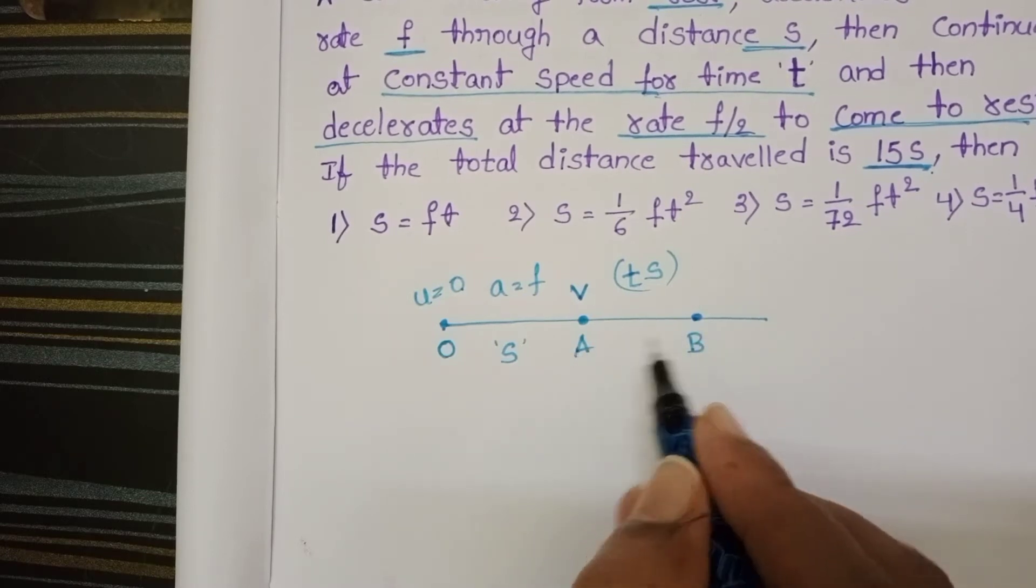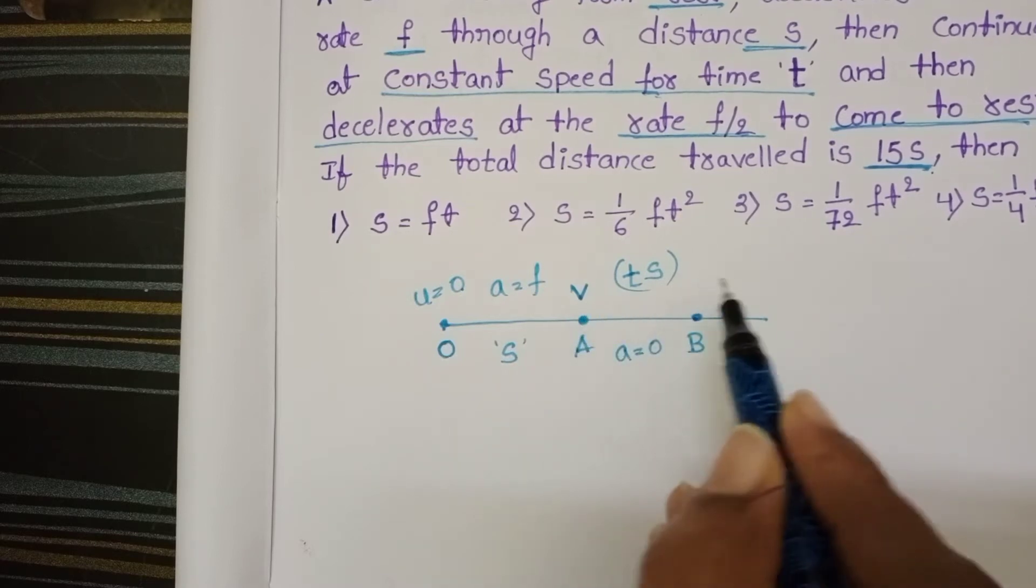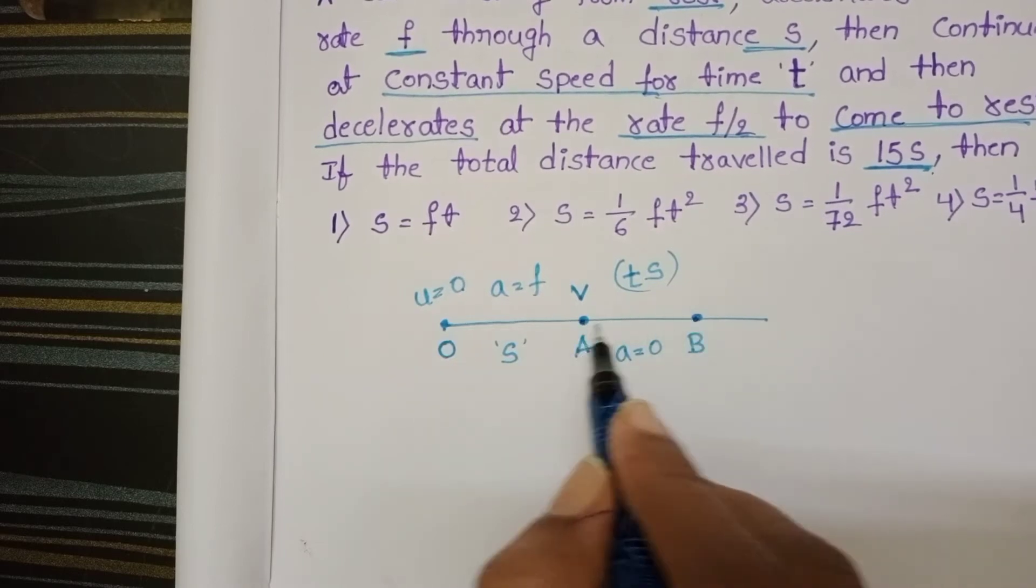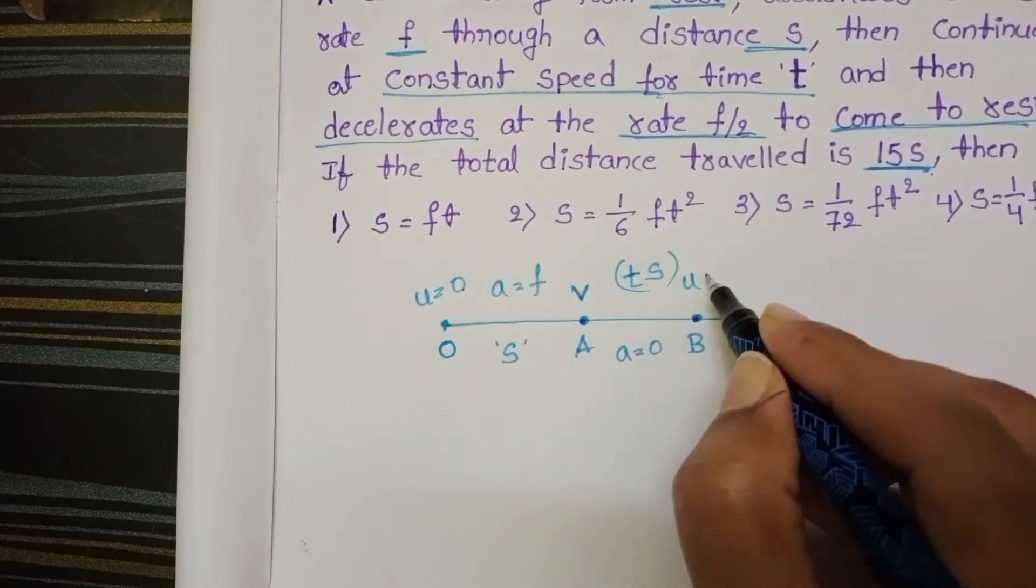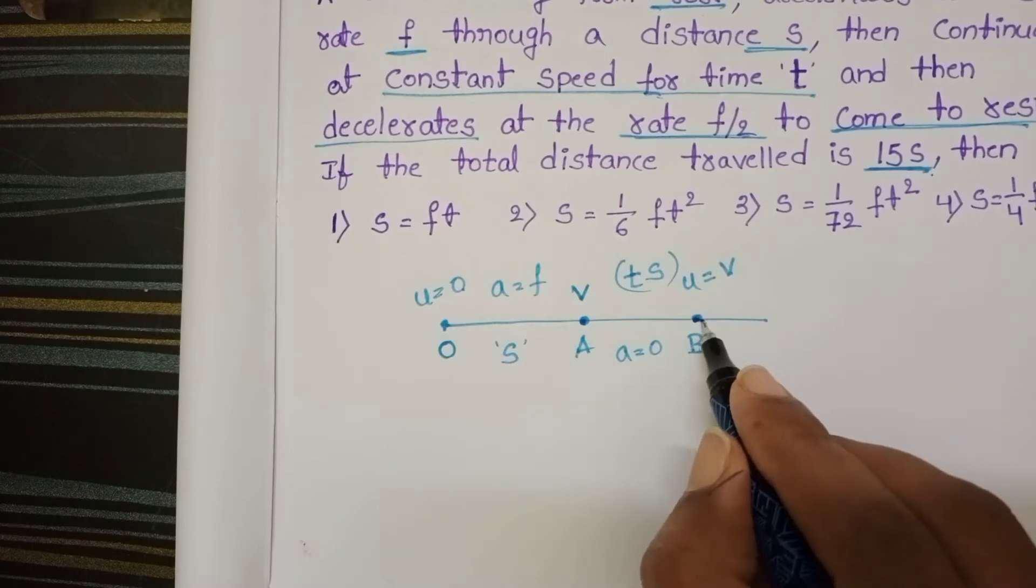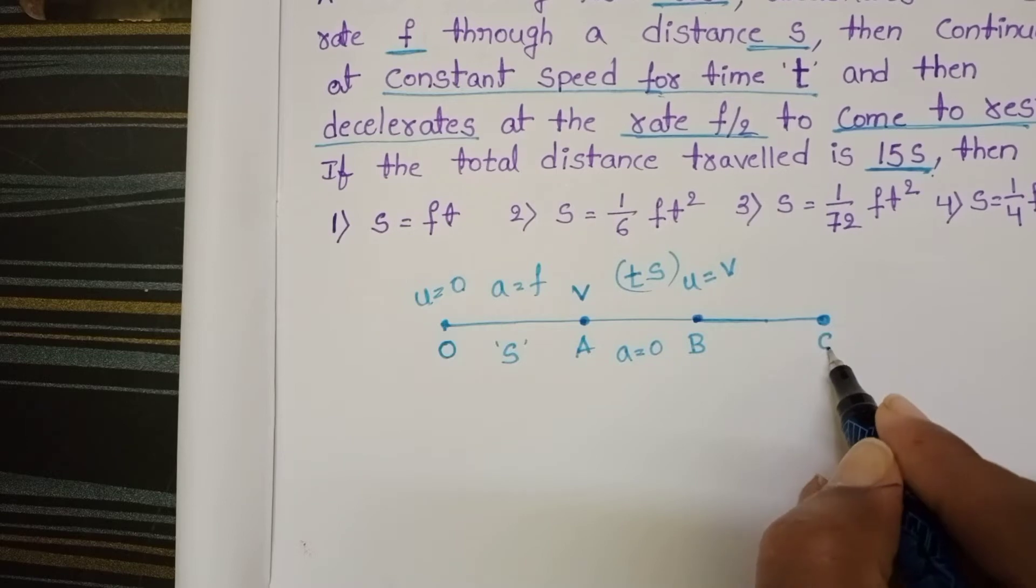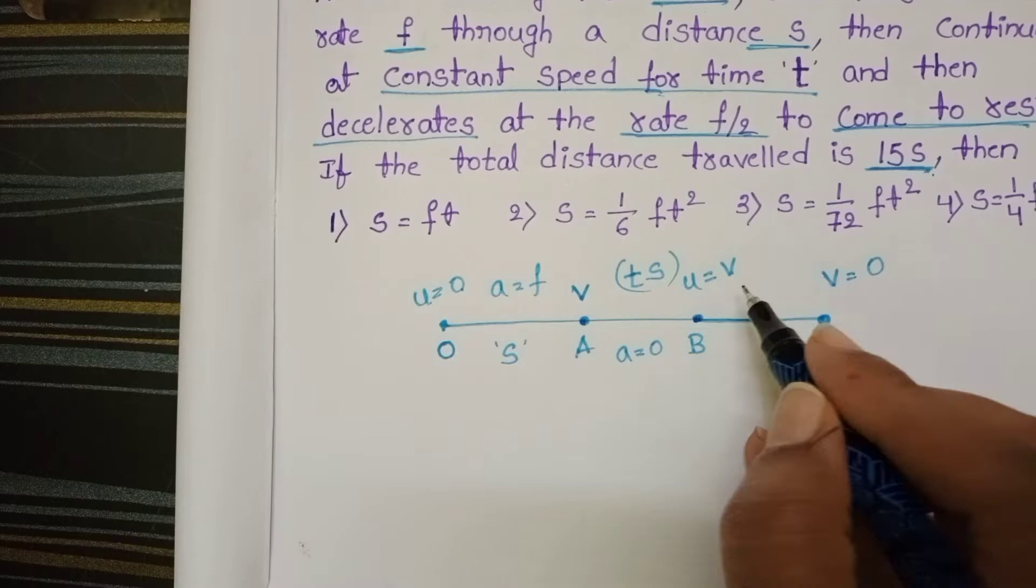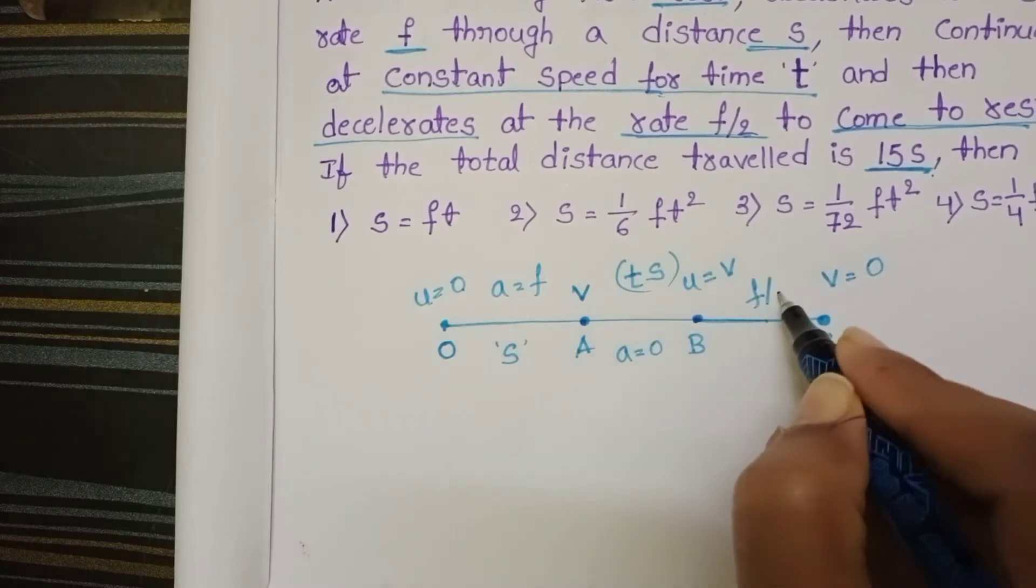So a to b, acceleration equals 0, because it continues with the same speed. At b point and at a point, speed is constant. So at this point, initial speed is v only but after then it decelerates, speed decreases and again at this point c, final speed again becomes 0. Here deceleration is f/2.